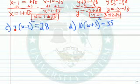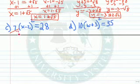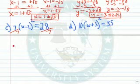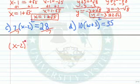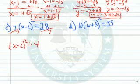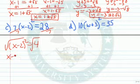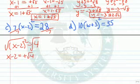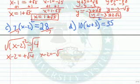What happens if we have a coefficient in front, like 7? Before taking square roots, we divide both sides by 7. This gives us x minus 2 squared equals 4, since 28 divided by 7 is 4. Now we take the square root of both sides: x minus 2 equals plus the square root of 4, or x minus 2 equals minus the square root of 4.